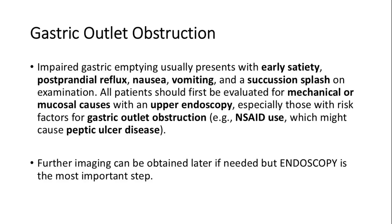Gastric outlet obstruction presents with early satiety, postprandial reflux, nausea, vomiting, and a succession splash on examination. Patients should be evaluated for mechanical or mucosal causes with upper endoscopy, especially those with risk factors like NSAID use. Endoscopy is crucial for further imaging if needed.